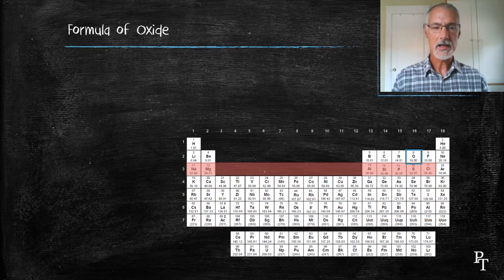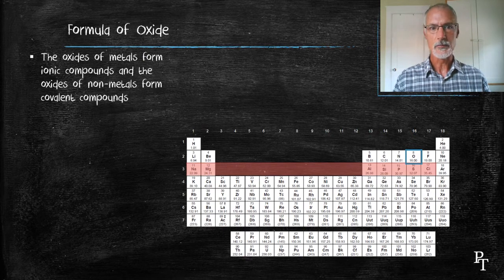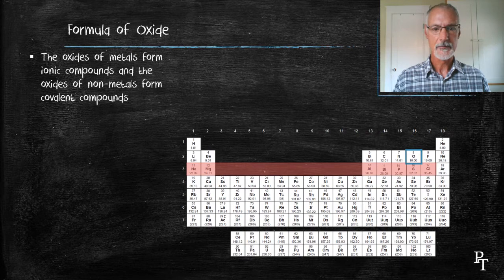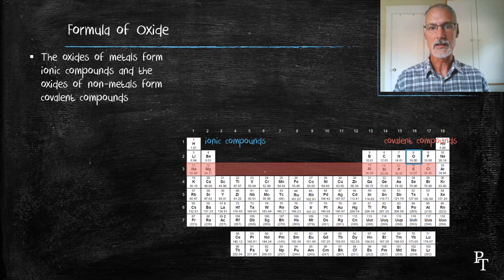First off, when oxygen combines with the first few members, magnesium, sodium, and aluminum, we form ionic compounds. When oxygen combines with our latter elements, phosphorus, sulfur, and chlorine, we find covalent compounds.